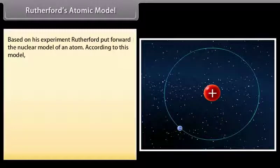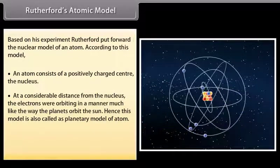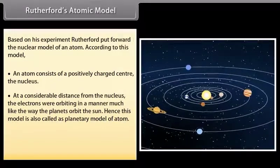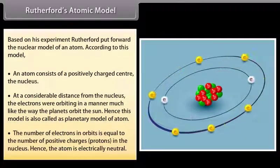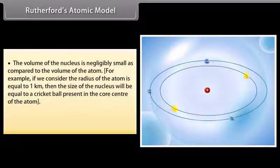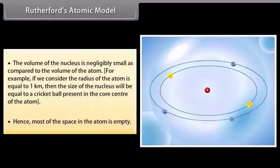Rutherford's Atomic Model: Based on his experiment, Rutherford put forward the nuclear model of an atom. According to this model, an atom consists of a positively charged center — the nucleus. At a considerable distance from the nucleus, the electrons were orbiting in a manner much like the way the planets orbit the sun. Hence, this model is also called the planetary model of the atom. The number of electrons in orbits equals the number of protons in the nucleus, so the atom is electrically neutral. The volume of the nucleus is negligibly small compared to the volume of the atom — for example, if the radius of the atom were 1 km, the nucleus would be the size of a cricket ball at the core center. Hence, most of the space in the atom is empty.